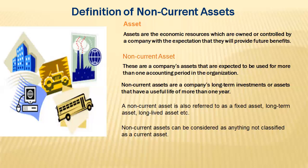Any asset that lasts beyond one year is what we refer to as a non-current asset. Assets used up within six, eight, nine, or eleven months are referred to as current assets. Any asset that lasts beyond one accounting period is regarded as a non-current asset.